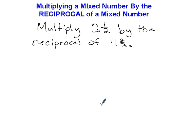You're stuck on a problem that says something like: multiply two and a half by the reciprocal of four and two-thirds. So you're going to do this in a few different steps.